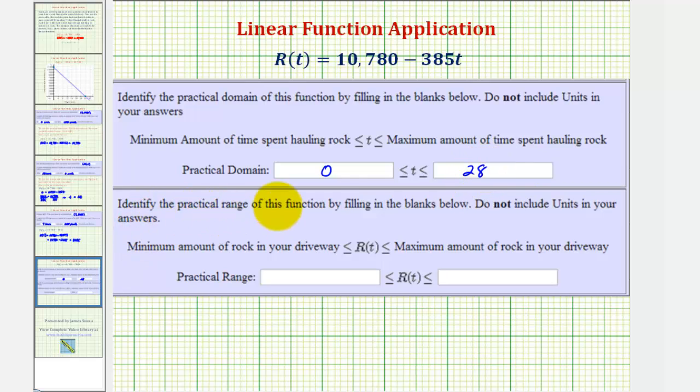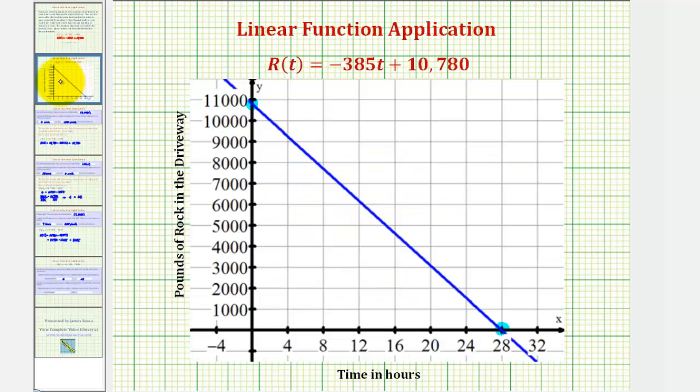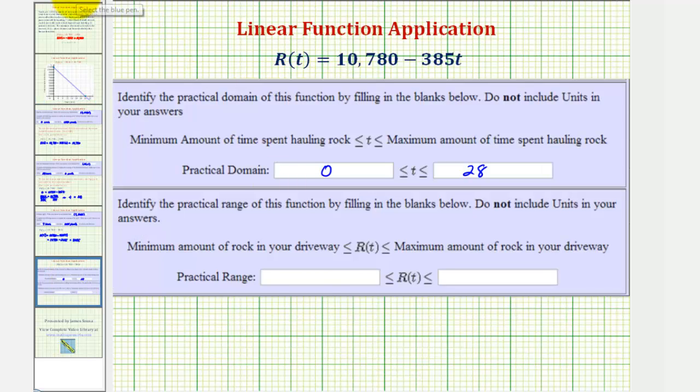And then the practical range, or all possible practical outputs, again going back to the graph just for a moment, looking at the vertical axis, notice how it would be from zero all the way to the maximum amount of rock in the driveway, which is the y-intercept of 10,780. So the range would be the closed interval from zero to 10,780.